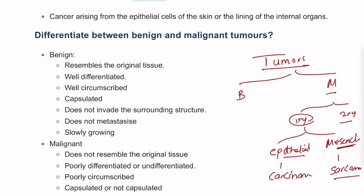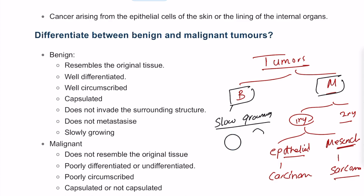How do we differentiate between benign and malignant tumors? Benign tumors are slow-growing and well-differentiated, meaning they resemble the tissue of origin. They are well-circumscribed, never invade surrounding structures, never metastasize, and are sometimes encapsulated.